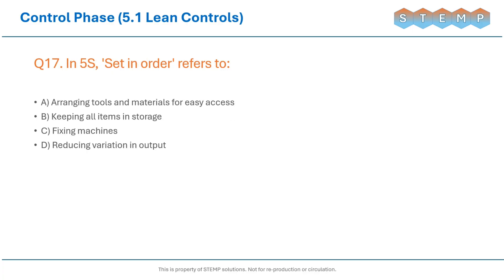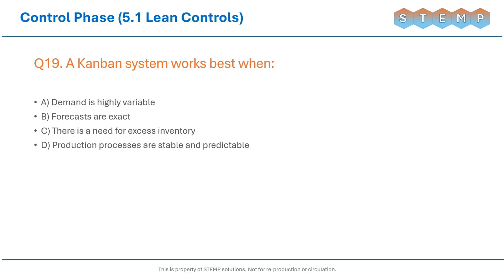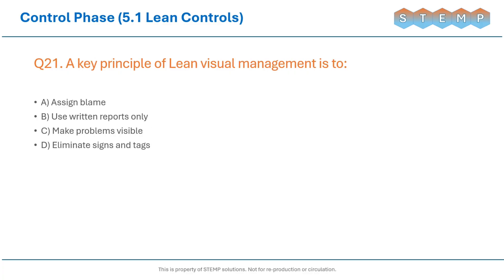In 5S, Set in Order refers to? A successful 5S implementation leads to? A Kanban system works best when? One indicator of poor 5S adherence is? A key principle of lean visual management is?